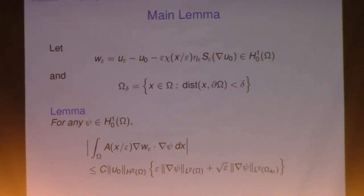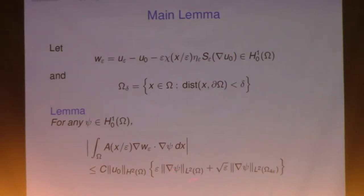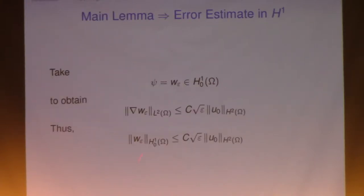And then you simply replace — you can actually replace the second term by the first. Bound these two terms by square root of epsilon times the L2 norm of the gradient of psi. And so that will give you this estimate.